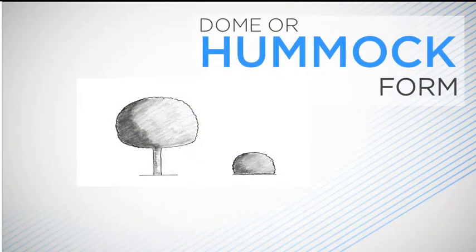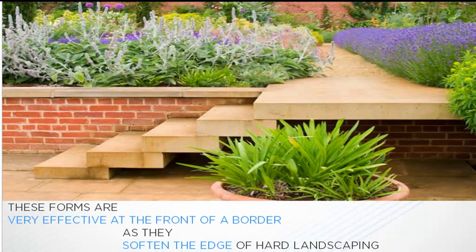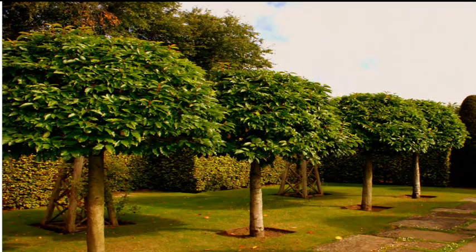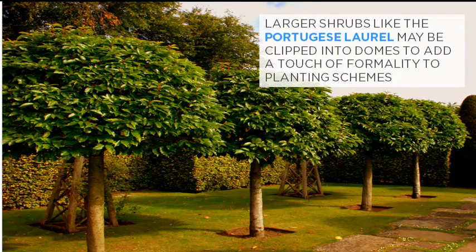Many plants develop into a dome or hummock, and these forms are very effective at the front of the border, where they soften the edge of the hard landscaping. Small herbaceous plants such as geraniums, heucheras and Alchemilla mollis are excellent for this. Shrubs that grow as domes include lavender and santolina, while some of the smaller grasses such as Festuca glauca also form hummocks. The relaxed form of the smaller domes provides visual stability and can be used to link and ground the more dynamic forms. Larger shrubs such as the Portuguese laurel may be clipped into domes, adding a touch of formality to a planting scheme.